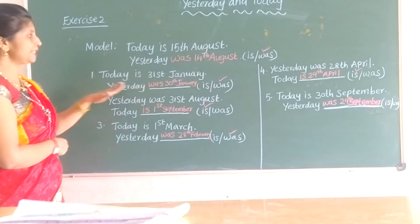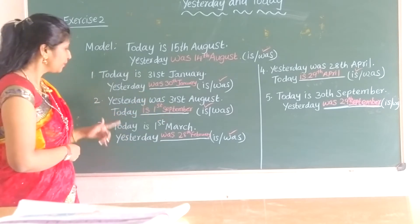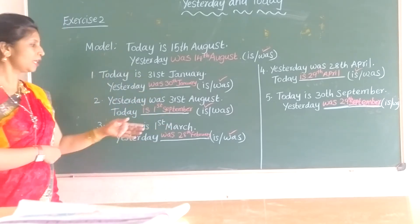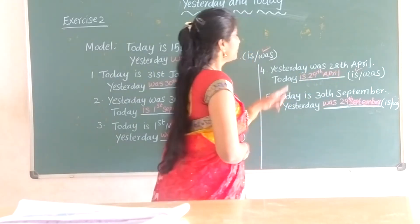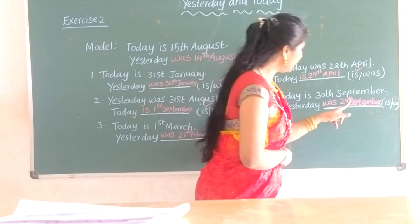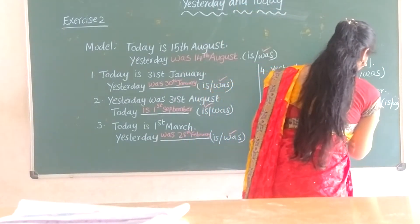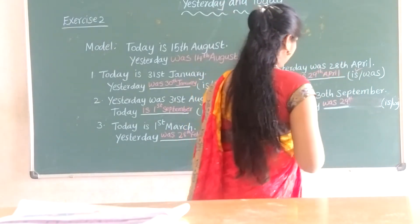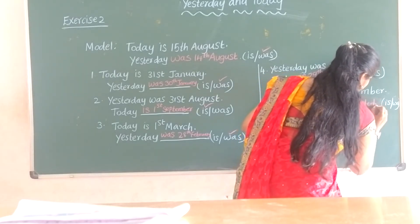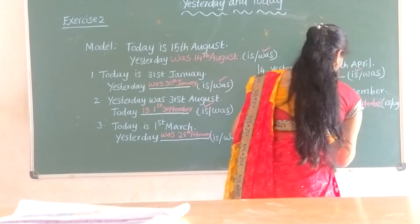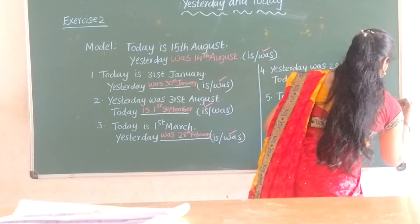Yesterday means 'was'. Yesterday was 31st August, today is 1st September. 1st March means yesterday was 28th February. Yesterday was 28th April, today means 'is' 29th April. Today is 30th September, yesterday was 29th September. September: S-E-P-T-E-M-B-E-R. Yesterday means 'was'. Okay.